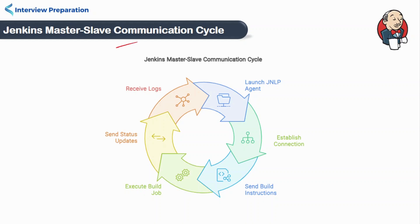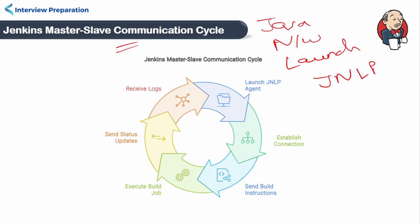Now let's understand how communication happens between master and slave. The communication between master and slave nodes is done via a Java-based protocol called Java Network Launch Protocol, also known as JNLP. The master node launches the JNLP agent on the slave node, which establishes a connection between the two nodes. This allows the master to send build instructions to the slave and receive status updates and logs from the slave nodes.